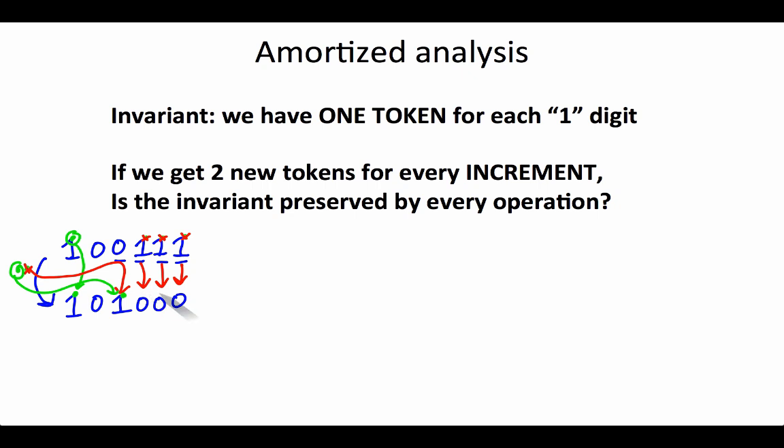All of the ones that we flipped to zeros are now zeros. We spent a token to flip that bit, but now we don't need the token anymore. This is an instance of a general pattern.